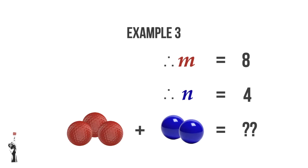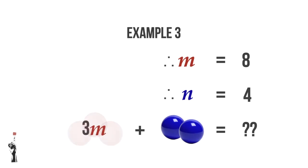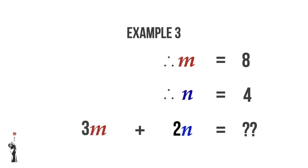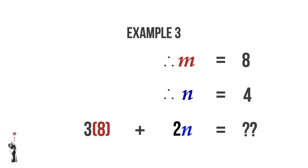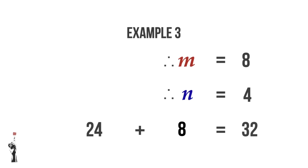So now we have 3 red balls plus 2 blue ones equal to a certain number. First, we replace them with variables, so we say 3 times M plus 2 times N. We said that M was equal to 8 and N was equal to 4. So we have 3 multiplied by 8 plus 2 multiplied by 4, which is 24 plus 8 to give us 32. And that is how we solve these little sums using algebra.